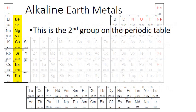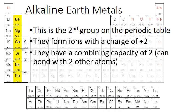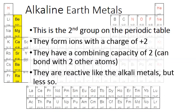So right next door, we have the alkaline earth metals. This is the second group on the periodic table. And these guys will form ions with a charge of plus two. And they all have a combining capacity of two, which means they can bond with two other atoms at one time. And they are reactive like the alkali metals, but less so. So they're not quite as reactive.